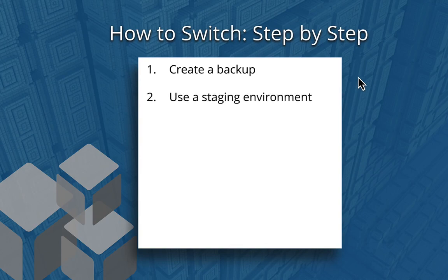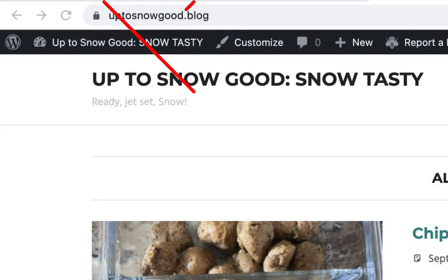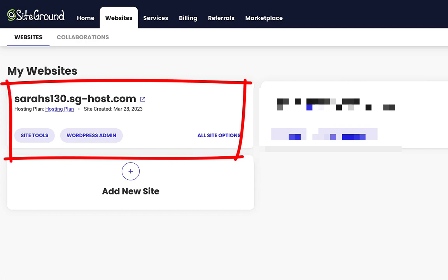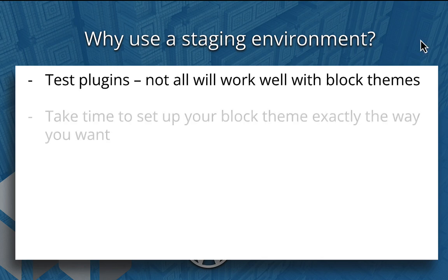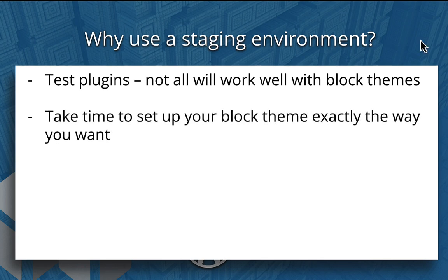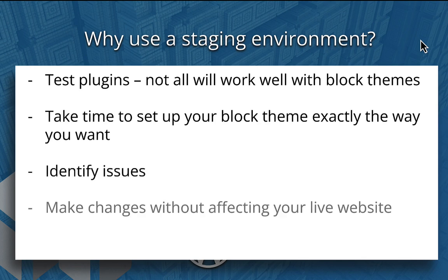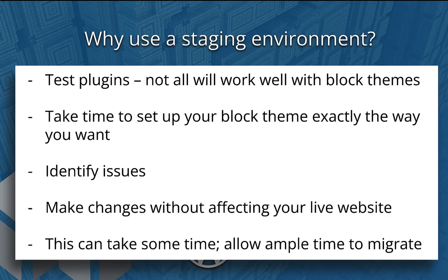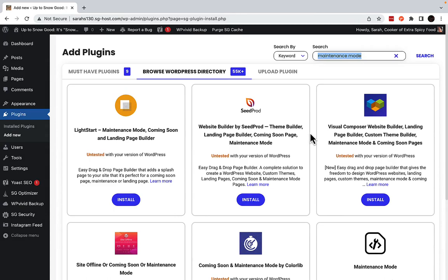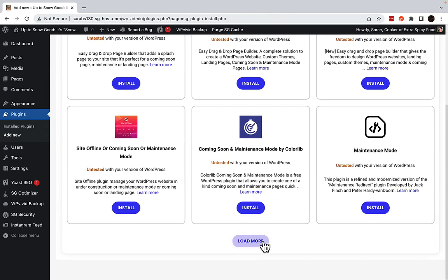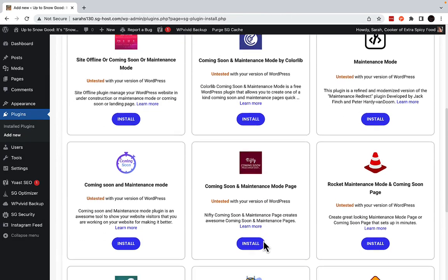Next, migrate your website to a staging environment. When switching from a block theme, it is strongly recommended that you test your new theme in a local or staging environment. Not all plugins work well with block themes, and it can sometimes take some time to set up your website exactly the way you'd like. This will allow you to identify any issues, make necessary changes, and configure your new block theme without affecting your live website. Do note that it can take some time to migrate a theme from a live server to a test environment, so allow ample time to do this. If you choose not to migrate to a test environment, consider installing and utilizing a maintenance mode plugin so that visitors to your site are not confused by the changes you will soon make to your live website.